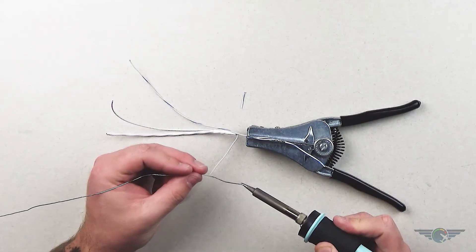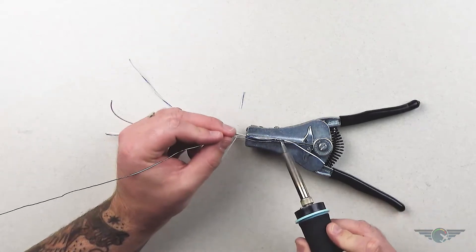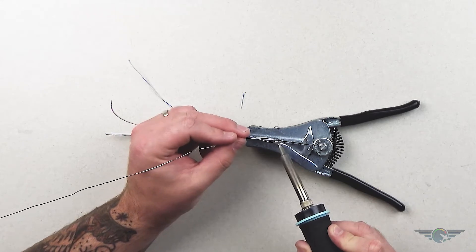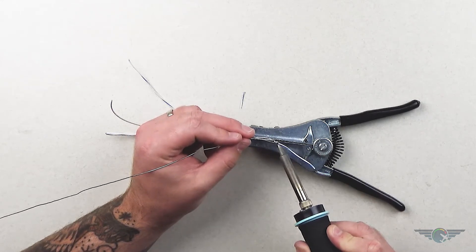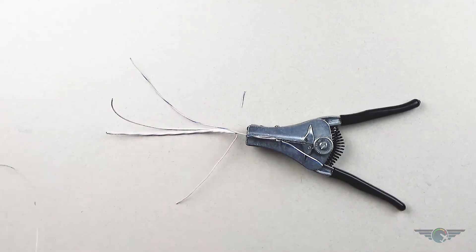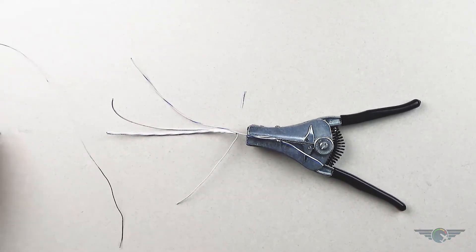So get some solder going on the end of my iron and then it's all about that heat transfer. Moving that solder and it pulls through the wire and wicks towards your heat. So there, that's done and soldered together.